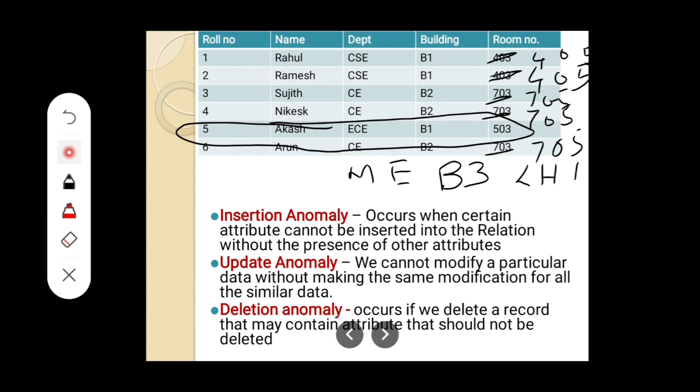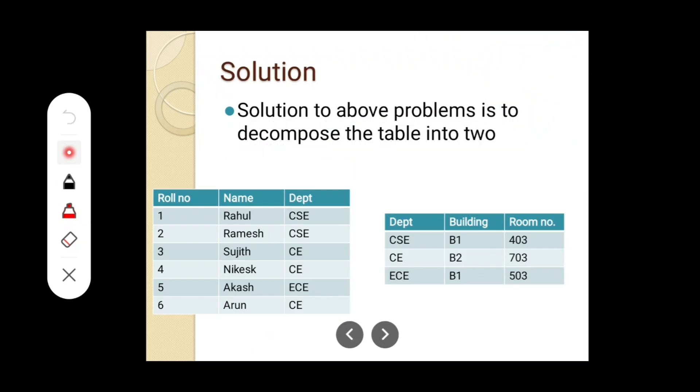This is called deletion anomaly. We do not have to delete the room details — we only need to delete the student details. But unfortunately, since these details are available in the same table, if we try to delete the details of the student, the building details and room details will also be deleted. This is called a deletion anomaly. One solution to handle these anomalies is to decompose the table into two tables.